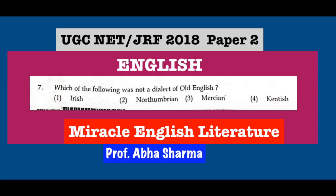Question number 7: Which of the following was not a dialect of Old English? This is a very easy question — the answer is Irish. Irish is not an Old English dialect. The other three — Northumbrian, Mercian, and Kentish — are the correct dialects of Old English.